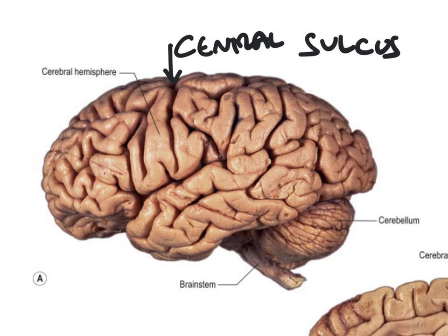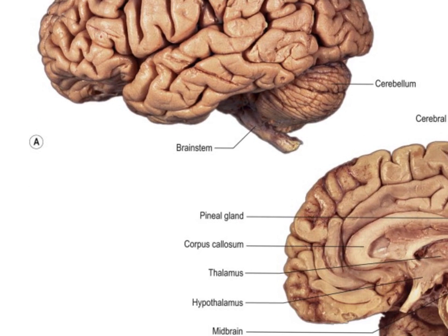Another important sulcus to identify is the lateral sulcus, sometimes called the Sylvian fissure. This lateral sulcus is important because it separates the temporal lobe from the frontal and parietal lobes. Another lobe we can see is the occipital lobe around the back, which is involved in vision and sits right at the back of the brain just over the cerebellum. So those are the main features of a lateral view of the cerebral hemisphere, and a really important landmark is the central sulcus.